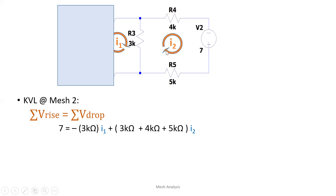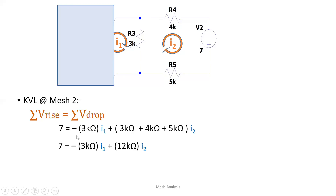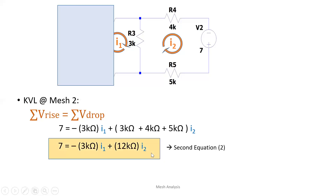We then subtract the effect of 3kΩ multiplied by I1. This term is negative because current I2 flows in one direction through R3 while I1 flows in the opposite direction — I1 contradicts the flow of I2. Therefore it is negative. Adding all resistors: 3k + 4k + 5k = 12kΩ. So the second equation is: 7 = −3kΩ·I1 + 12kΩ·I2.